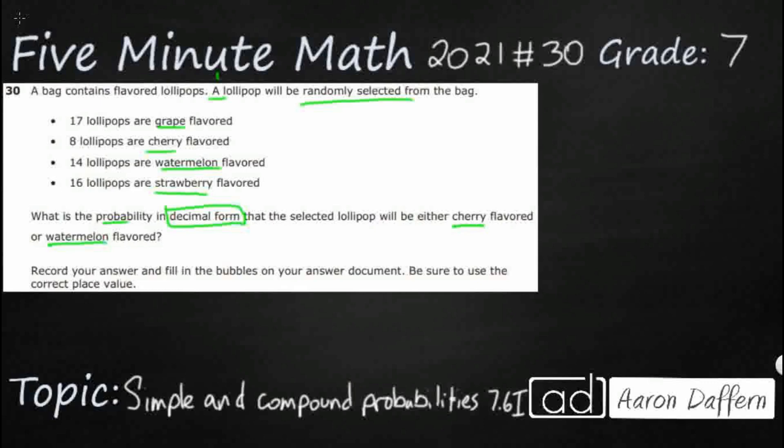So when we are looking at cherry or watermelon, let's take a look. We can just look at each of those individually, and then we can add them up because that's really what this 'or' means. So cherry is going to be C over total. Let's see, cherry is 8 over, what's my total?